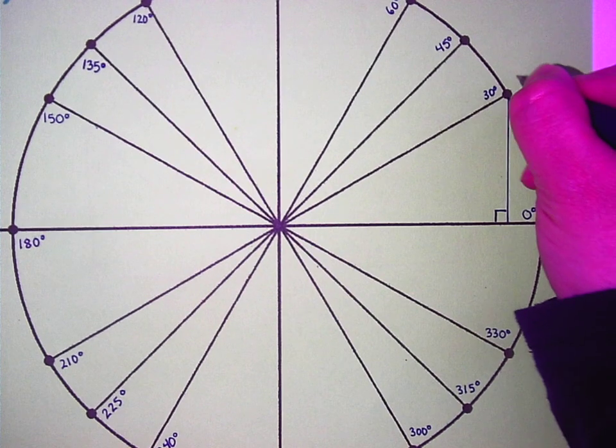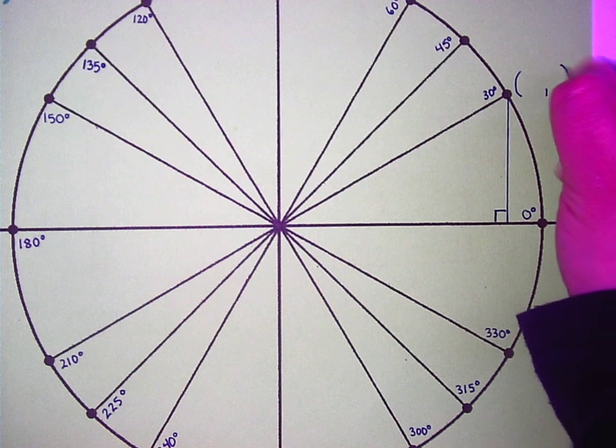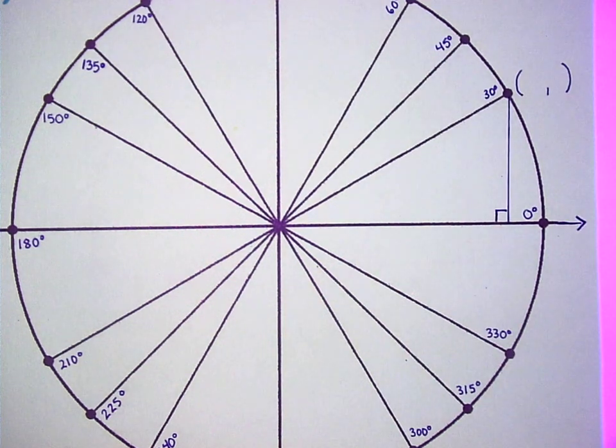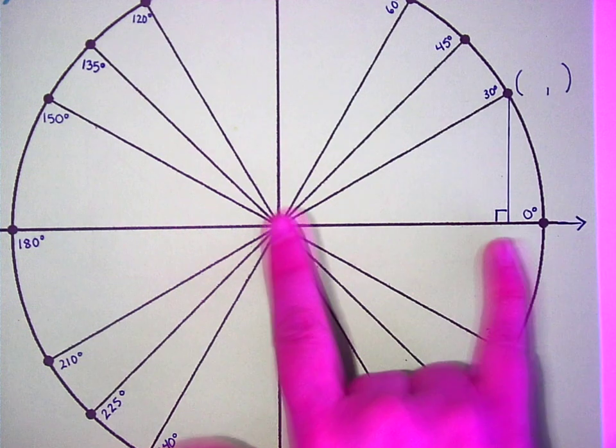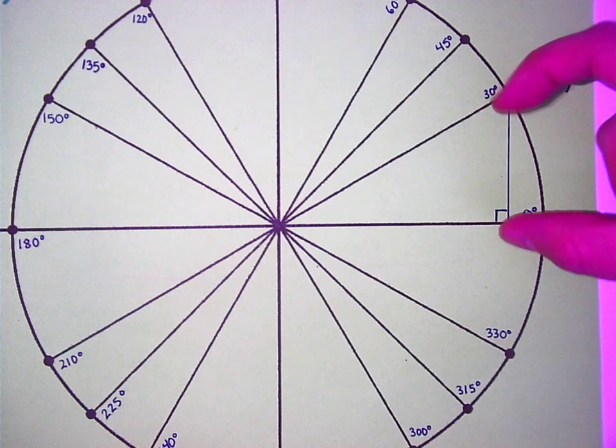When you list a point like this, what comes first, the x or the y? The x. Everybody understand that? So this first thing is going to be this distance, and the second point is going to be that distance.